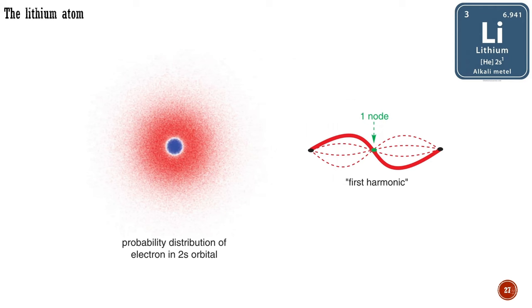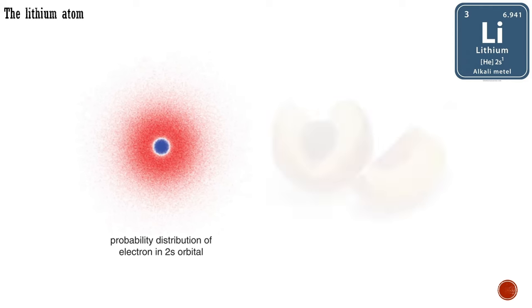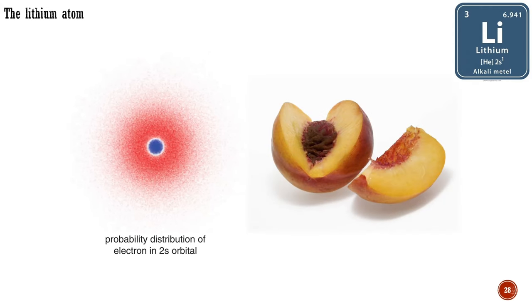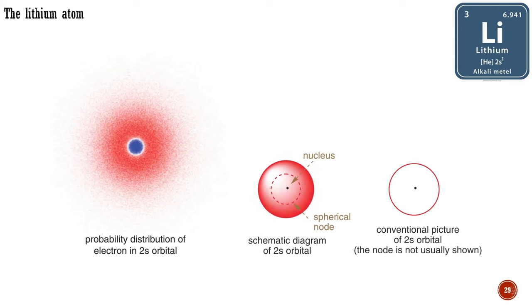Like the vibration of the string, this next orbital has a node. On the string, the node was the point where no motion was observed. In an atom, a node is a point where the electron can never be found, a void separating the two parts of the orbital. For the orbital containing the third electron of the lithium atom, this node is spherical. It divides the orbital into two parts which nestle one within another, like the layers of an onion or the stone inside a peach. We call this orbital the 2s orbital, 2 because we have moved up to an orbital with a node, like the first harmonic, and s because the orbital is still spherical.